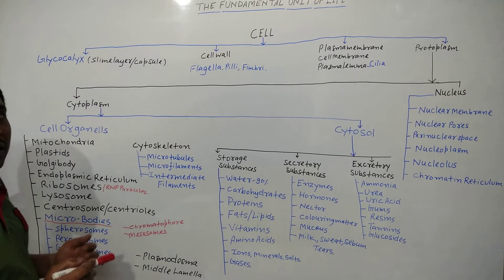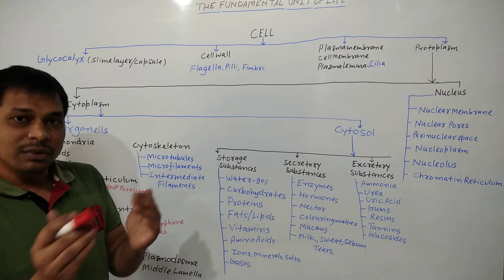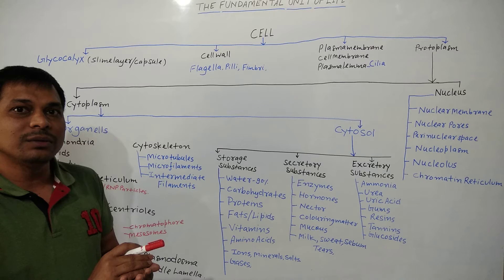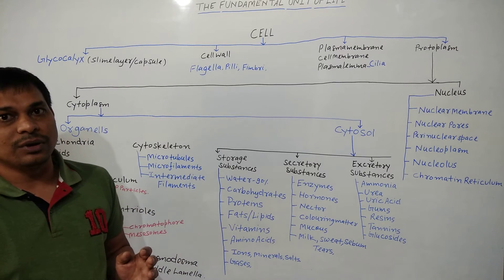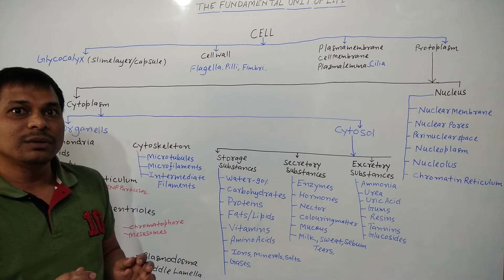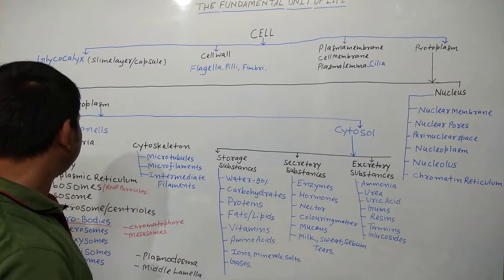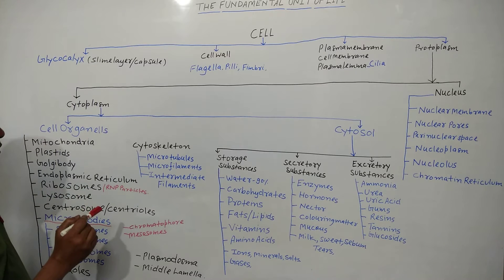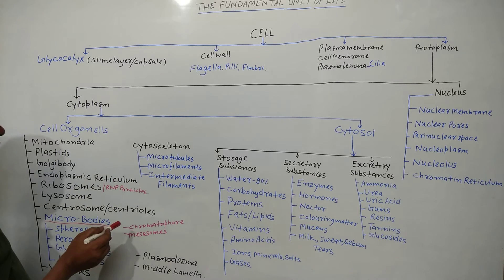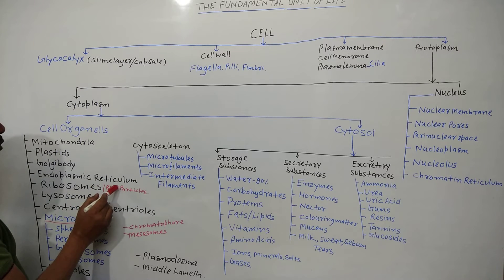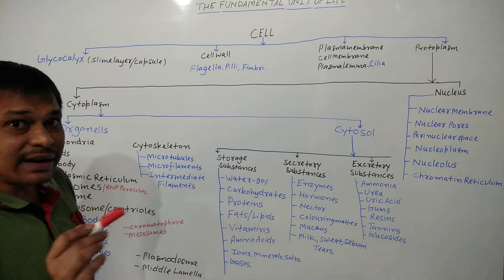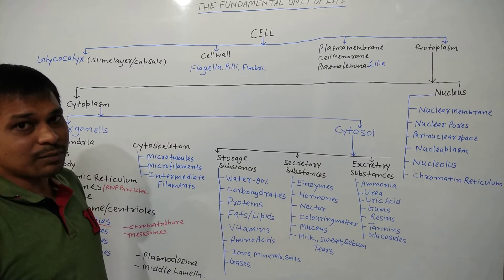The endoplasmic reticulum is of two types: smooth endoplasmic reticulum and rough endoplasmic reticulum. If ribosomes are present on the endoplasmic reticulum, it is known as rough endoplasmic reticulum. If ribosomes are not present, it is known as smooth endoplasmic reticulum. Ribosomes are also known as RNP particles — ribonucleic acid protein particles — and are of two types: 70S and 80S.